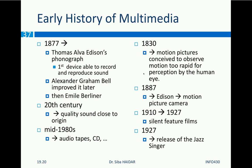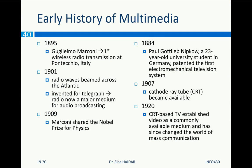In parallel, we have motion pictures, conceived to observe motion too rapid for perception by the human eye. In 1887, Edison also had a contribution to the motion picture camera. From 1910 to 1927 we have the beautiful silent feature films — Laurel and Hardy, Charlie Chaplin — you can find them on YouTube, no sound, only silent films. Until 1927 we had our first sound inside films.